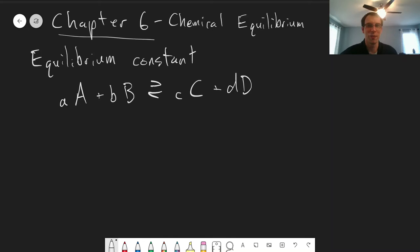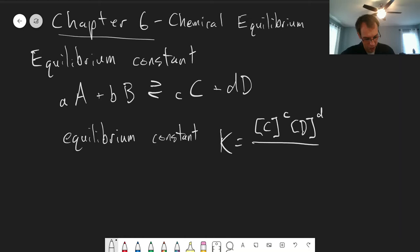The equilibrium constant for that reaction we write as, we give it the symbol K, and it is given as the concentration of our products raised to their stoichiometric ratios, so the concentration of C and D raised to their stoichiometric ratios, little c and little d, divided by our reactants, concentration of A raised to the A, concentration of B raised to the little b.